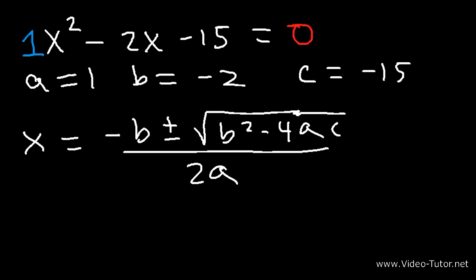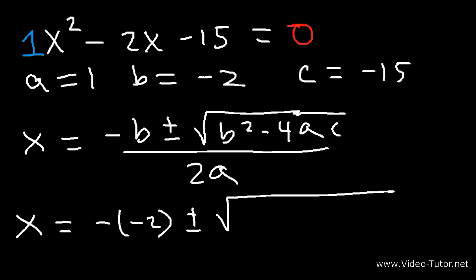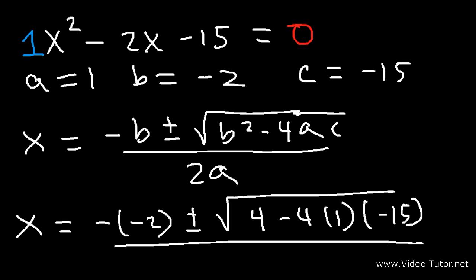So let's go ahead and plug in the numbers that we have. b is negative 2, so b squared — negative 2 squared — is negative 2 times negative 2, which is positive 4. a is 1 and c is negative 15, divided by 2a, or 2 times 1, which is 2.